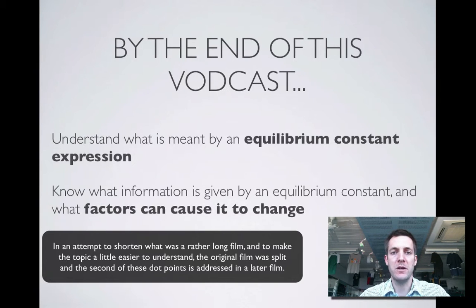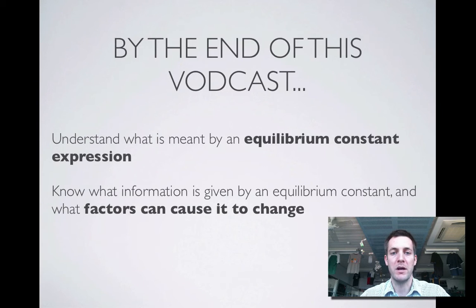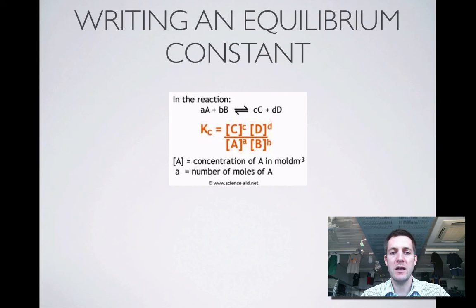So hopefully by the end of this film you'll know what an equilibrium constant expression looks like and you'll know how to write one if you're given the equation for a reaction. And also you'll have to think about what sort of factors will cause an equilibrium constant to change, and judging by its name, equilibrium constant, you might be thinking probably not very many things and you'd be quite right about that. But anyway, let's have a look at what an equilibrium constant looks like.